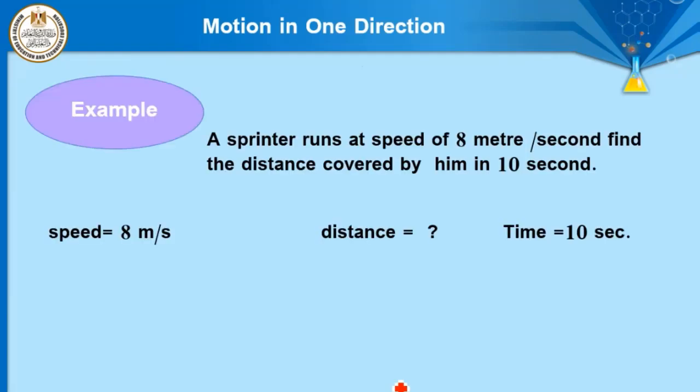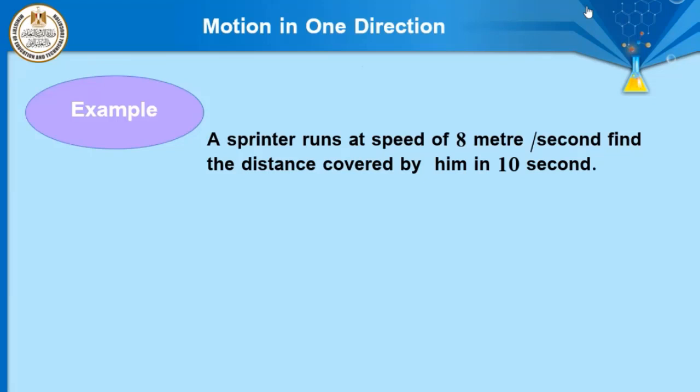Example number one: a sprinter runs at a speed of 8 meters per second. Find the distance covered by him in 10 seconds. Given: speed = 8 m/s, time = 10 s, distance is unknown. Law: distance = speed × time. Distance = 8 × 10 = 80 meters.